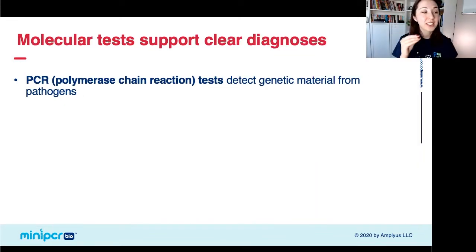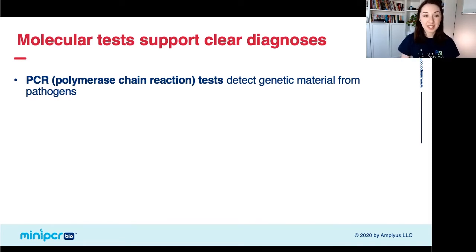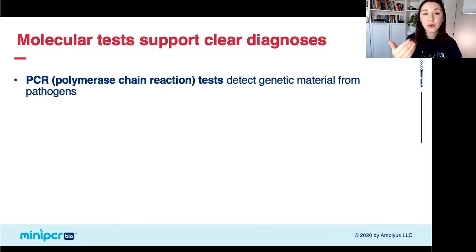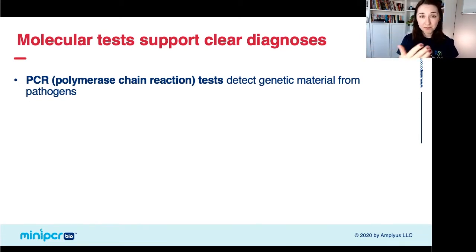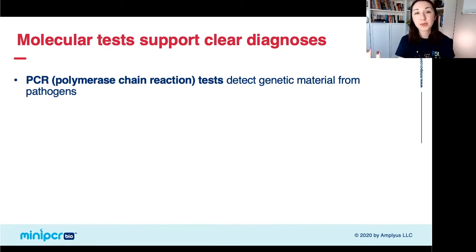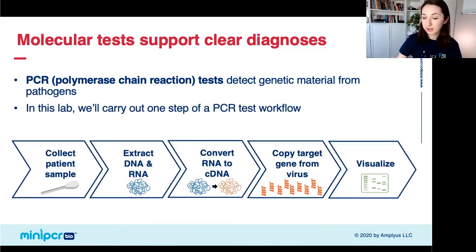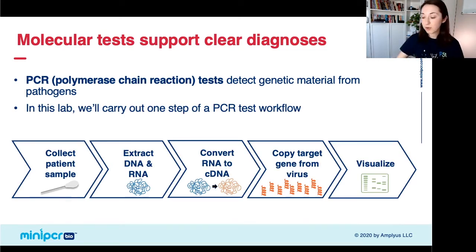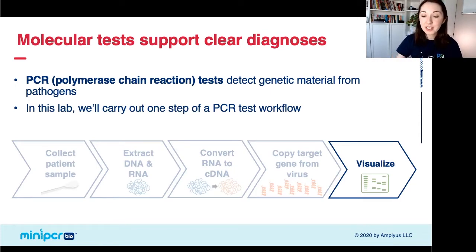In this lab, to accurately diagnose which disease each patient has — especially where original diagnoses are unclear — we're going to use a molecular test. In the clinic, this is often done using PCR, which has a number of different steps. In this lab, the students are only going to be performing that last step, the visualization step. We have already simulated all the first steps — from collecting the sample to doing PCR and amplifying it — so students will just be focused on gel electrophoresis and visualization.